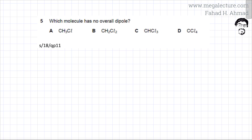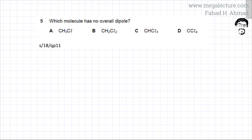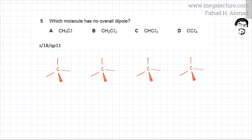To figure out whether a molecule has an overall dipole or not, I need to draw the shape of the molecules. Carbon is making four bonds, so the shape of the molecule is going to be tetrahedral. All the bonds are going to be as far away from each other as possible, so all of them are going to have a tetrahedral arrangement. Let me draw the three-dimensional shape of all the molecules.